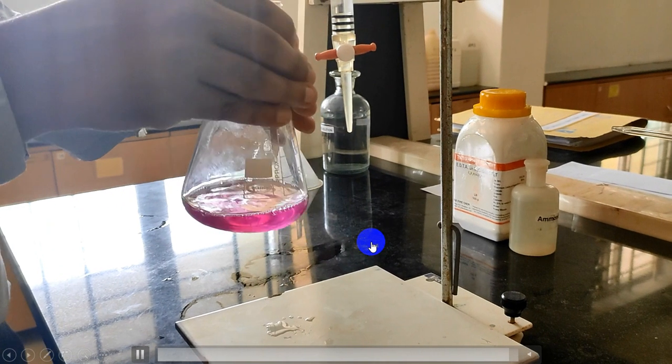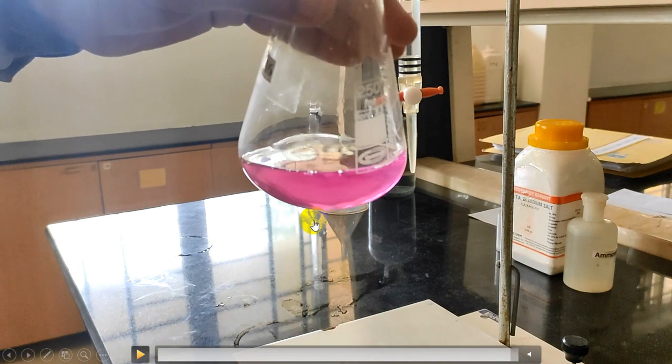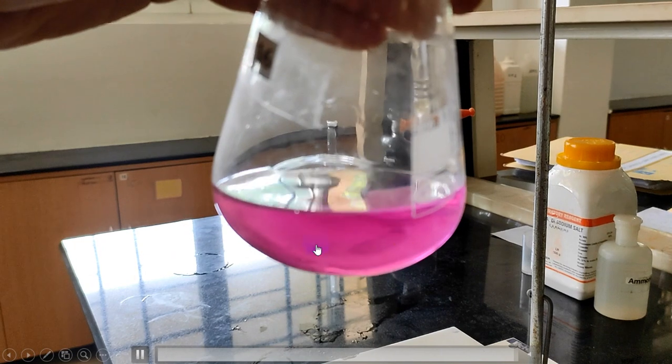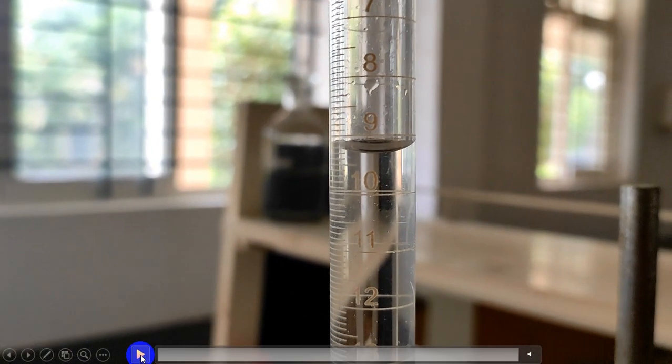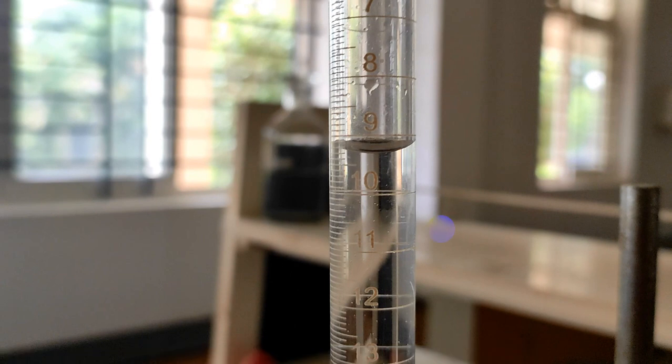Now you got the endpoint. Endpoint is violet color which indicates all the nickel sample present in the sample solution has been reacted with the standard EDTA taken in a burette. The indicator is free now and the color of indicator is violet color which is imparted. This indicates the endpoint of the reaction. Note down the reading, burette reading, final burette reading with which you can calculate the amount of nickel.